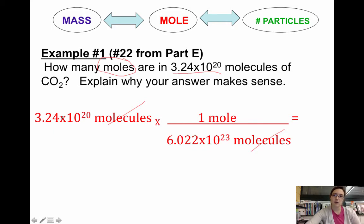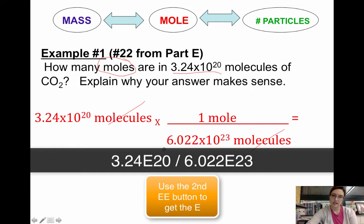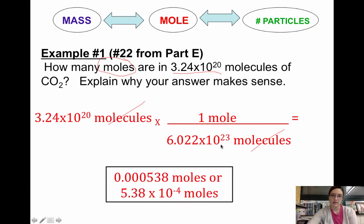Now when you put this in your calculator, remember how we put exponents in our calculator before, you should be doing 3.24E20 divided by 6.022E23 and you get 0.000538 moles, or if you keep it in scientific notation, 5.38 times 10 to the negative fourth moles.